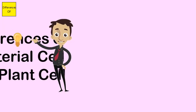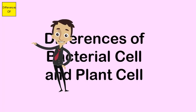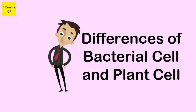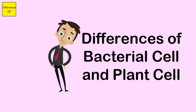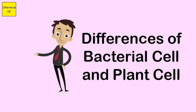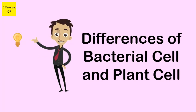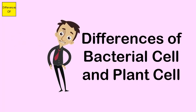Difference between bacterial cell and plant cell: Bacteria are most primitive unicellular organisms. Plant cells are advanced. The structure of bacteria cell is very simple. The plant cells are more complex.